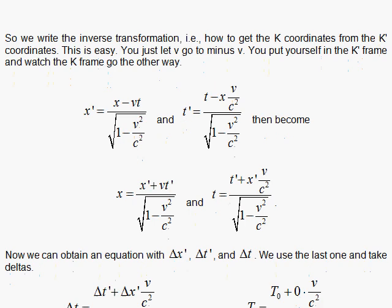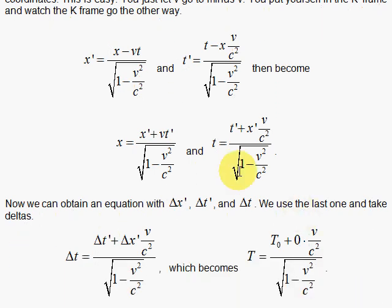Using that equation, I then set up delta t, delta t prime, and delta x prime, and I make sure that this is zero because the clock cannot move in its reference frame. Delta x prime must be zero.